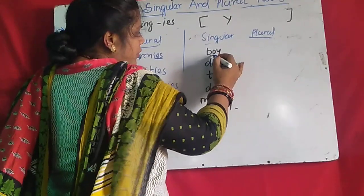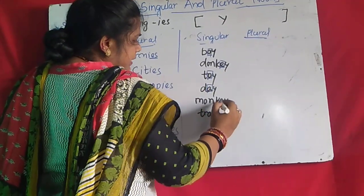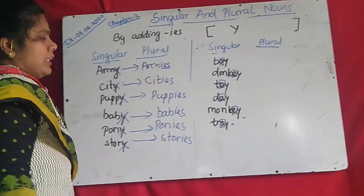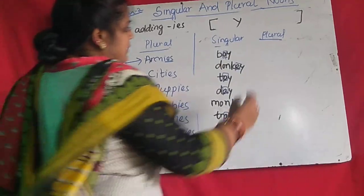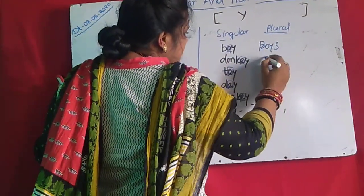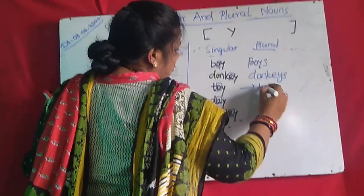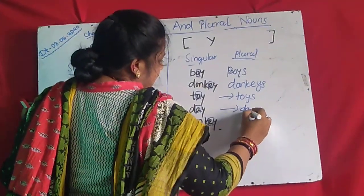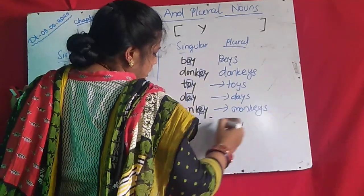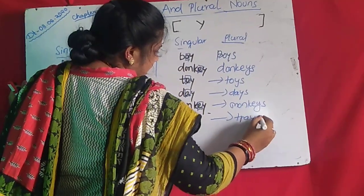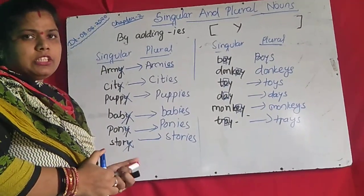Here, Y before O or A — if Y is before a vowel, then simply add S. 'Boy,' 'donkey,' 'toy,' 'day,' 'monkey,' 'play' — this plural is simply adding S: B-O-Y-S — 'boys'; D-O-N-K-E-Y-S — 'donkeys'; M-O-N-K-E-Y-S — 'monkeys'; D-A-Y-S — 'days.' If you write IES that is wrong. P-O-Y-S, B-A-Y-S, M-O-N-K-E-Y-S — if Y is before a vowel, only you add S.